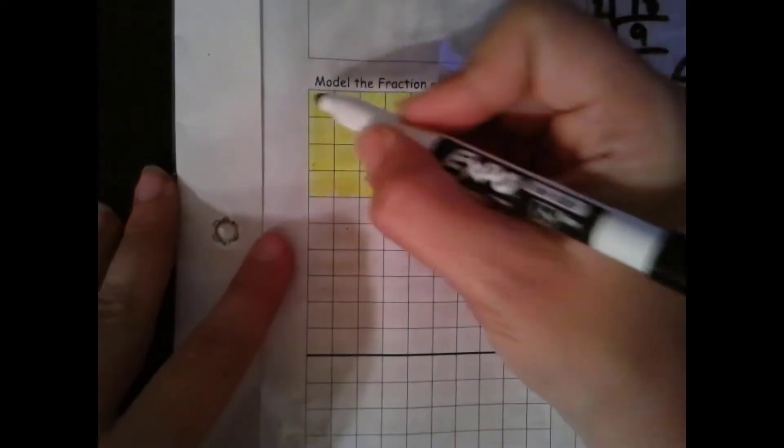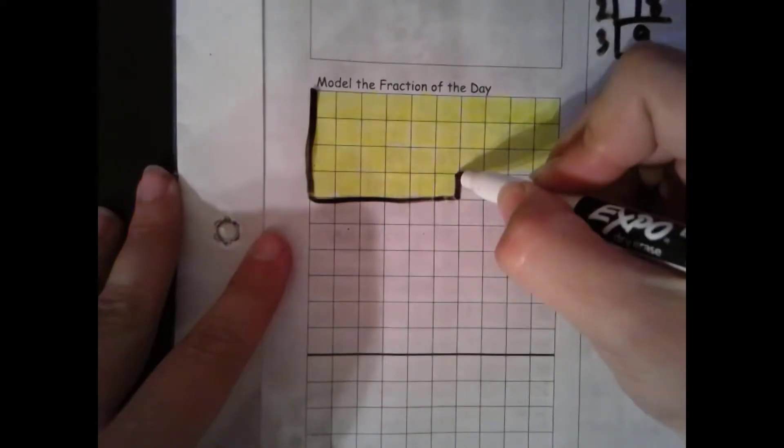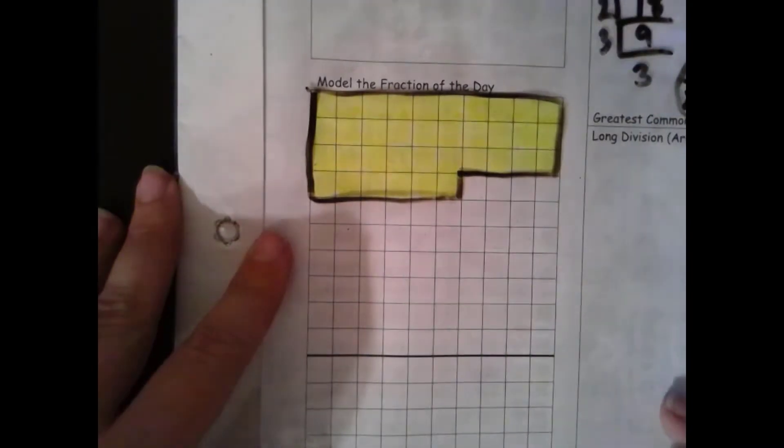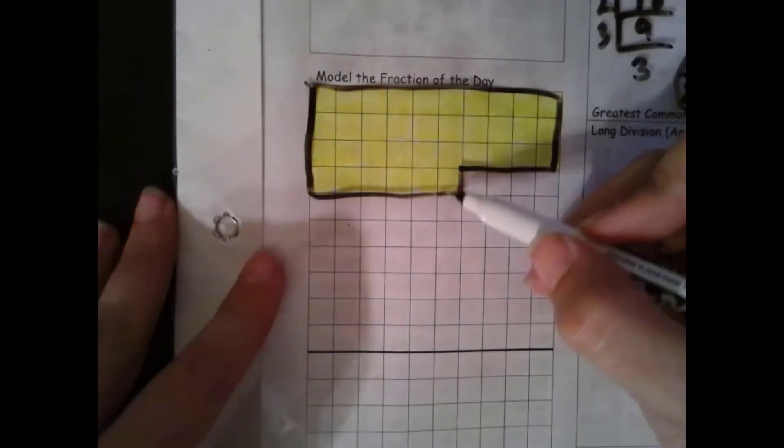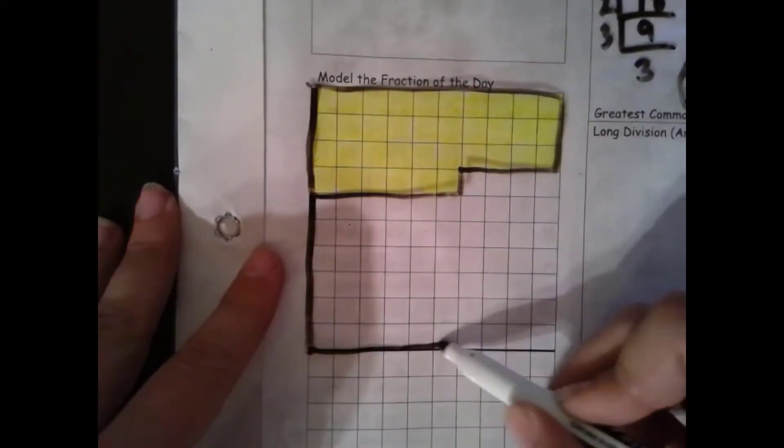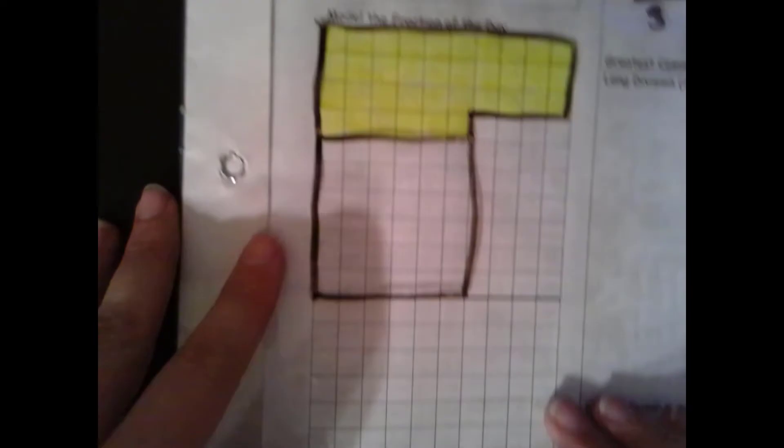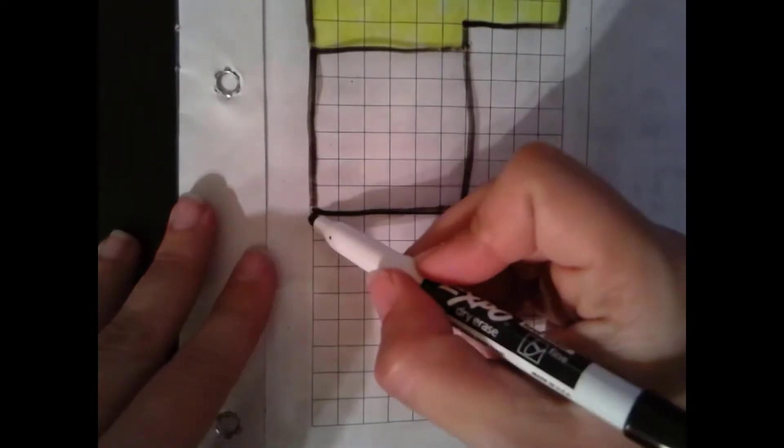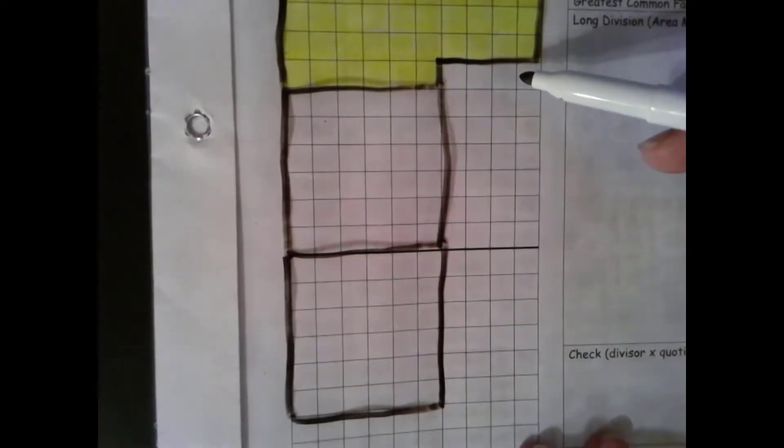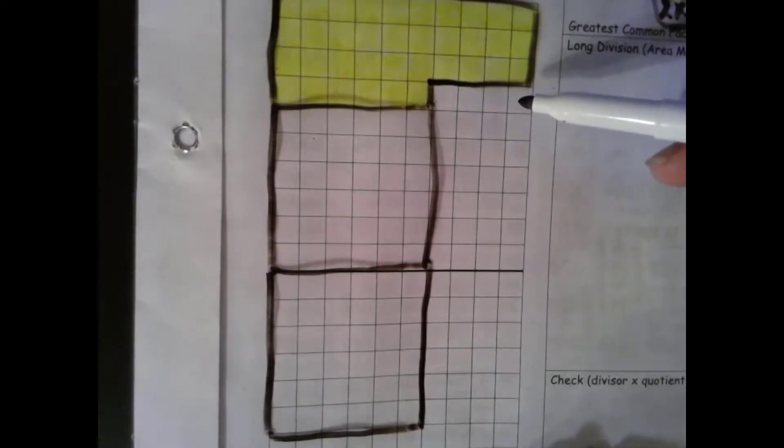So let's go ahead and make our groups of 36. 36. 36 is a perfect square. I'm going to do a couple of those. And then 4 times 9 is 36. So 1, 2, 3, 4, 5, 6, 7, 8, 9.